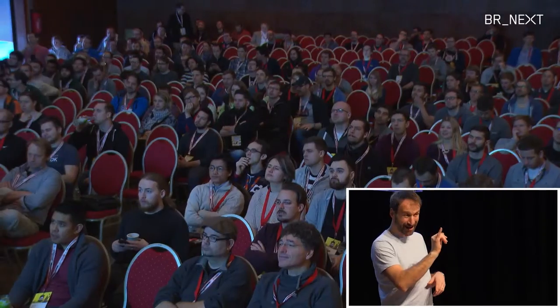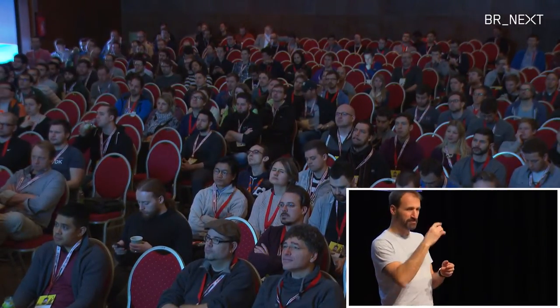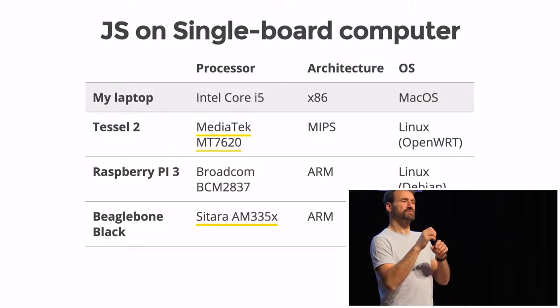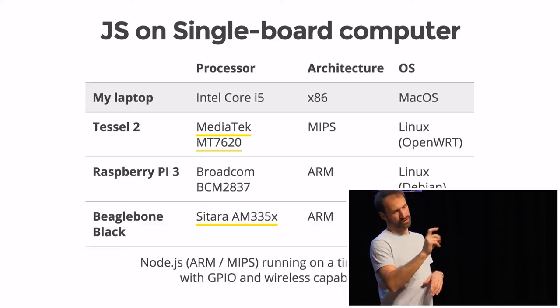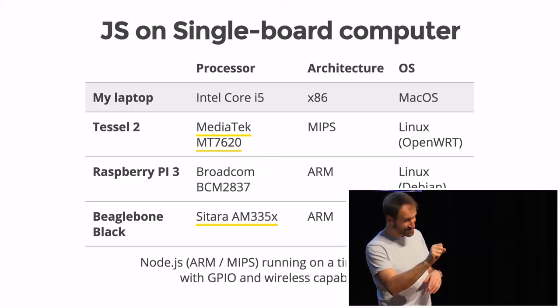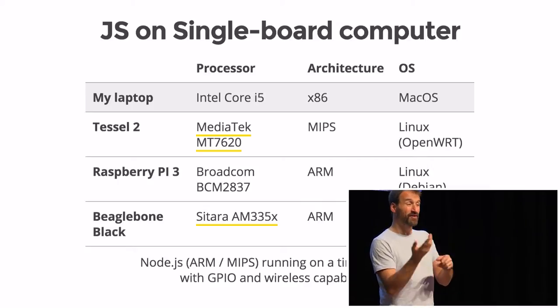Two other single-board computers worth mentioning are Raspberry Pi 3 and BeagleBone. They have their own processors — Broadcom and Sitara — with ARM-based architecture and run Debian Linux. When thinking of single-board computers, think of it like your laptop: it's Node.js compiled for ARM or MIPS, running on a tiny computer. The key difference is it has GPIO pins that allow you to connect to hardware, and sometimes wireless capabilities as well.